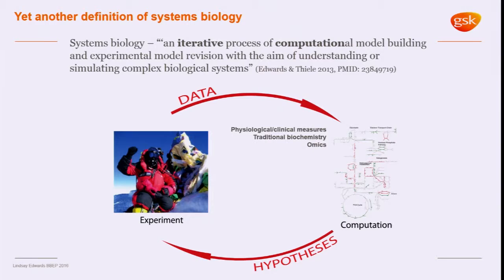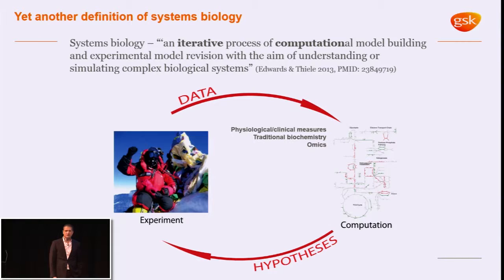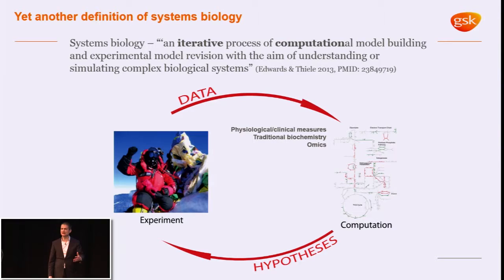I want to start with perhaps a somewhat contentious question about what is systems biology. There are a lot of definitions — this is mine, just to muddy the waters still further. But this is something of a consensus now. It's mainly around the idea of having an iterative process where you gather data and model it, and then the model leads you to need more data, so you go back and gather more. The two key elements are the iterative nature and the modelling.